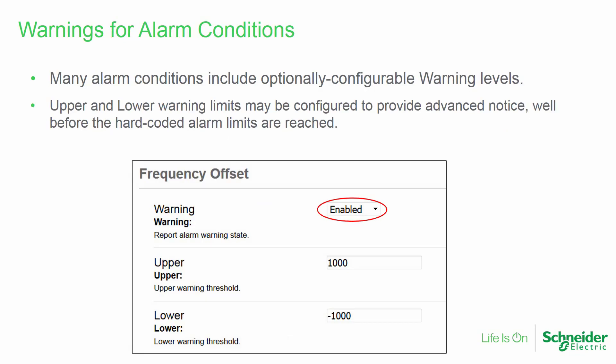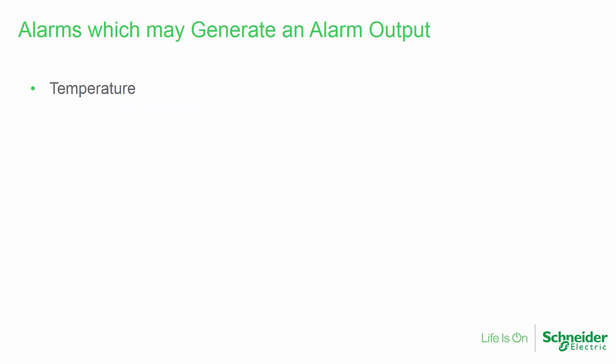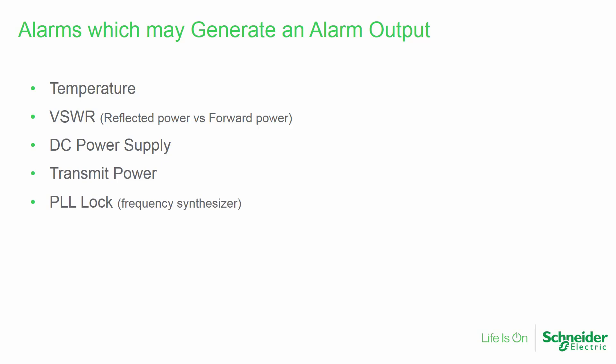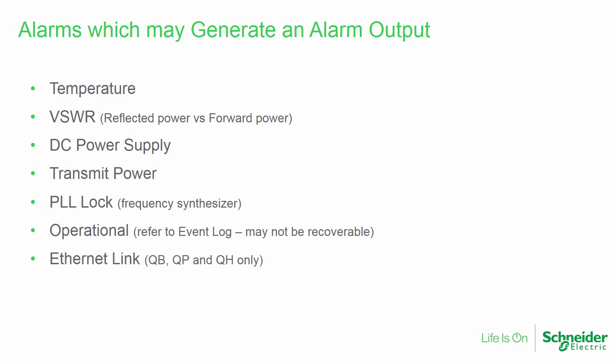Many alarm conditions in the QData radio include optionally configurable warning levels. These upper and lower warning limits may be configured to provide advanced notice well before the hard-coded alarm limits are reached. Numerous conditions are monitored which may generate an alarm output or a warning. These include temperature, VSWR (a comparison of reflected versus forward power), DC power supply voltage, the measured transmit power, PLL lock (which monitors the radio's frequency synthesizer), the operational alarm representing issues which may not be recoverable, ethernet link connectivity, and the cooling fans on the rack-mountable units.